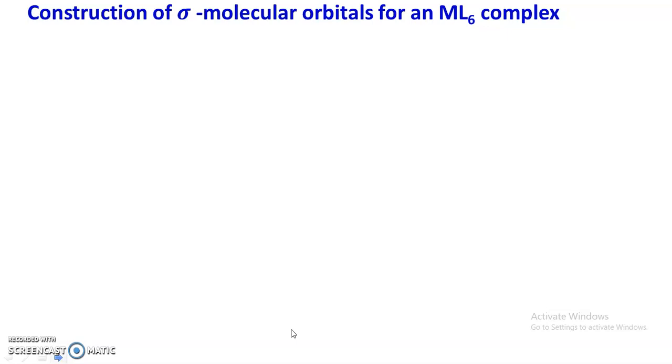Welcome to this online lecture series in organic chemistry. We are discussing the molecular orbital theory for coordination compounds. As per one postulate of molecular orbital theory applied to coordination compounds, after the formation of ligand group orbitals, these try to combine with matching metal orbitals, and vice versa, resulting in the formation of bonding and antibonding molecular orbitals. Each metal orbital combines with a matching symmetry ligand orbital by the LCO principle to give one bonding and one antibonding molecular orbital.